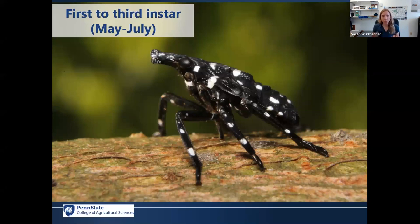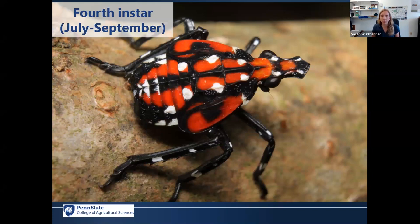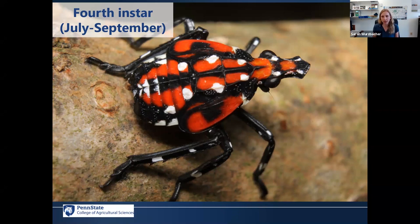This is a close-up of what the first to third instars really look like — little hoppers with distinctive white dots on their back, which are really easy to identify. There's a very high positive identification rate for spotted lanternfly even in the nymph stages because it's such a distinctive insect. The fourth instar is larger and really showy. If you're in the quarantine right now you're probably still seeing some of these, but most are starting to move into the adult life stage now — this is the time of year when people really start to notice them.